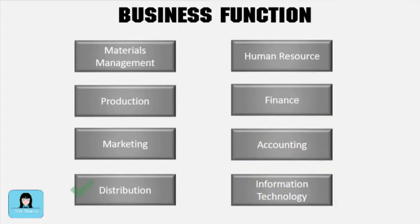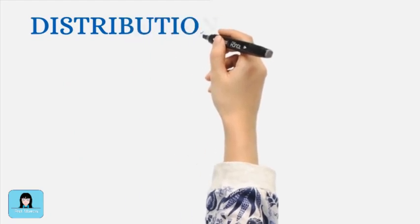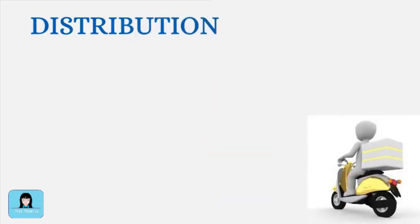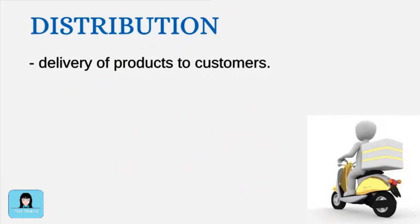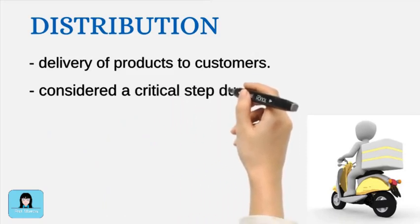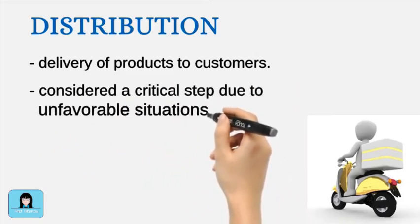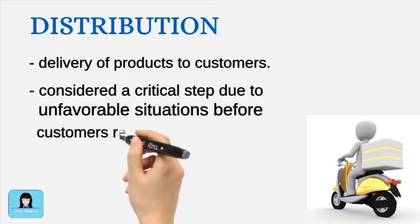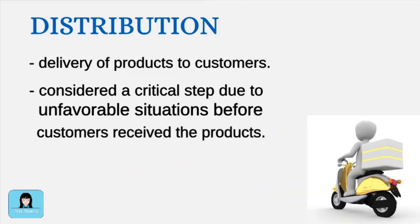The distribution function will be the next in the discussion. Distribution is the activity of getting the product to the customer after the sale. This is a critical step to business organizations, as much can go wrong before the customer takes possession of the product. For example, damaged merchandise and excessive delays of delivery may result in customer dissatisfaction and lost sales.